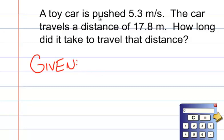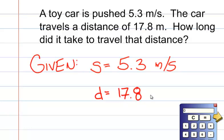In this case, a toy car is pushed 5.3 meters per second. That is a measurement of speed. So we know our speed is 5.3 meters per second. The car travels a distance of 17.8 meters. The distance equals 17.8 meters.